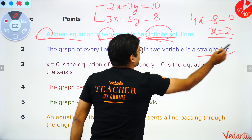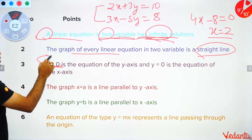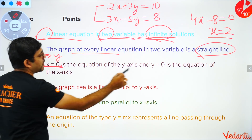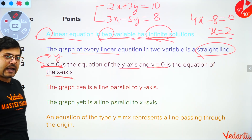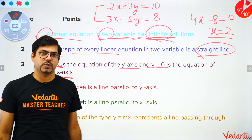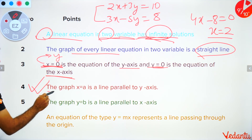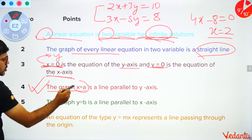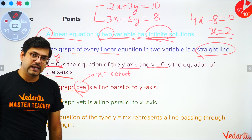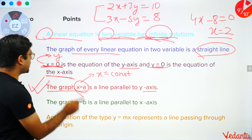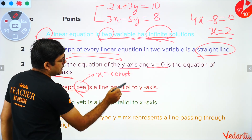The graph of every linear equation is a straight line — you must know this. Also remember: x = 0 is called the y-axis, and y = 0 is called the x-axis. These are also the second names for the coordinate axes. Importantly, x = a, meaning x equals a constant, will always be a line parallel to the y-axis.